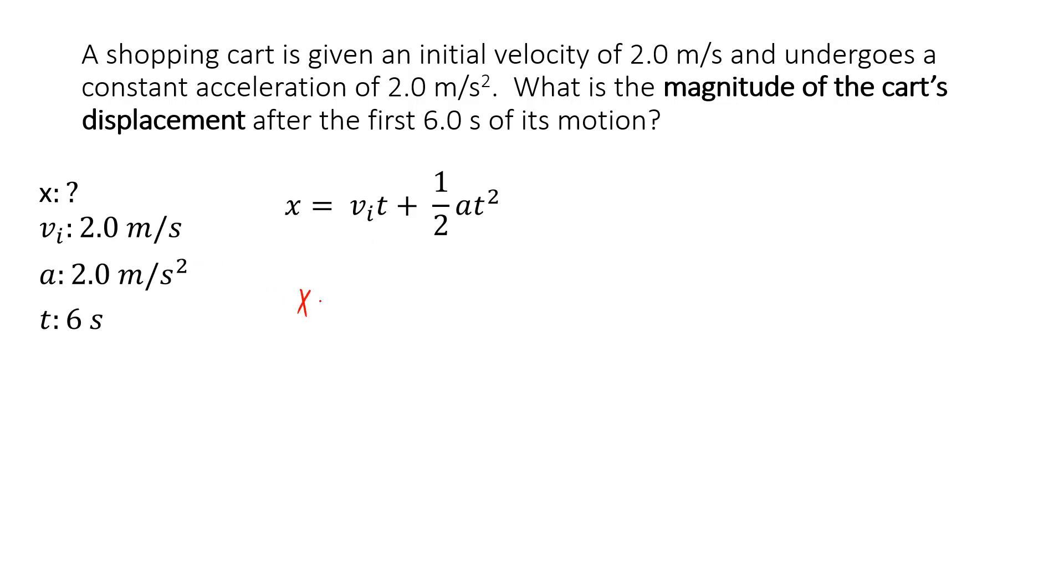Now we're ready to do the math. x equals v_i is 2 times t which is 6, plus one half times a which is 2 in this problem, and 6 again, only the 6 is squared. 2 times 6 plus 0.5 times 2 times 6 squared, and you get 48 meters as your answer.